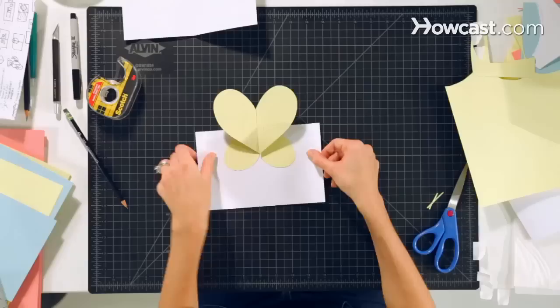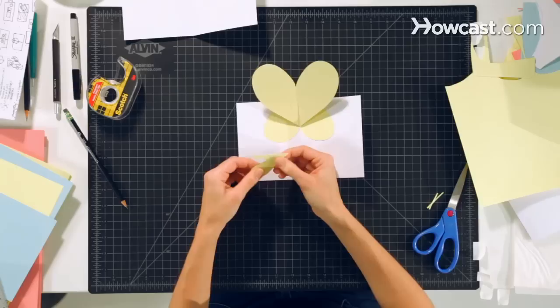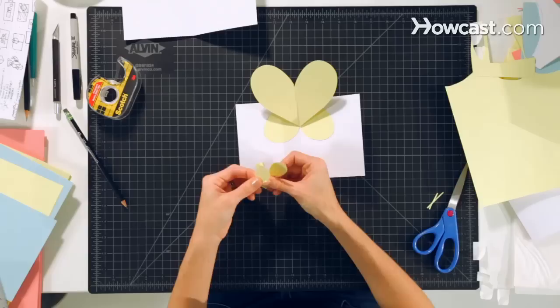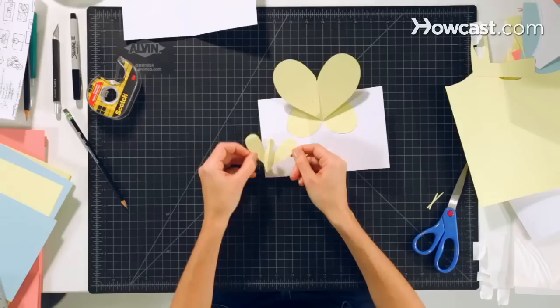And if you feel so inclined, you can cut out a little butterfly body, fold it in half. This is also from the template that I downloaded online. Fold the wings forward so that he looks like this.